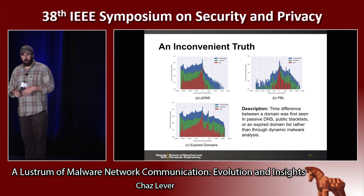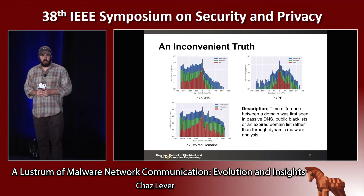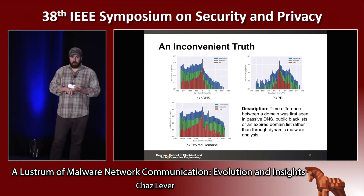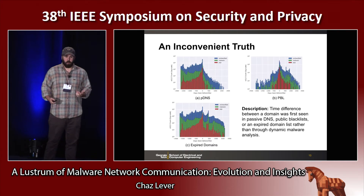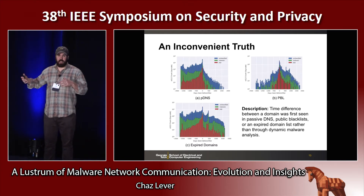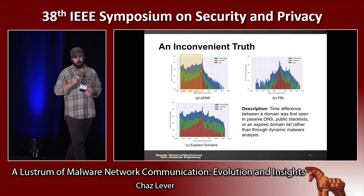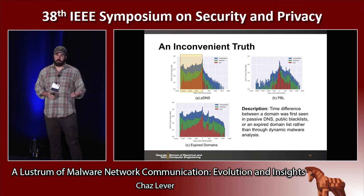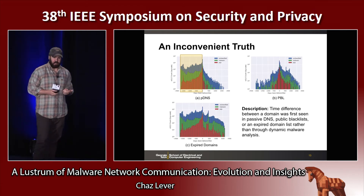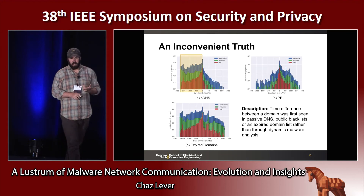This next plot is one of the more interesting ones — we spent a long time trying to make sense of it. We're looking at the network signal and where we saw it first: from a malware feed, from a public blacklist, or on the network itself. Ideally, we'd want to see things in the malware feeds first, then showing up in public blacklists or passive DNS. Instead, we saw this artifact on the left: cases where we saw things on the network weeks or even months before we actually received the sample from dynamic malware analysis. This is problematic because it means there's a long window of vulnerability if you're relying on malware feeds before taking preventative measures — it's a very reactive approach.